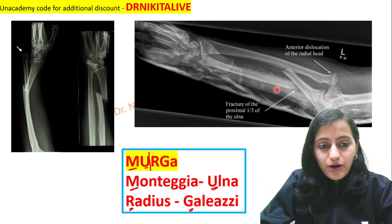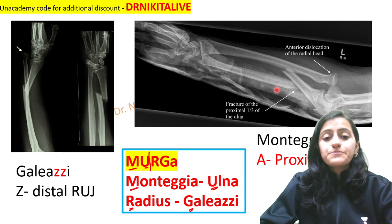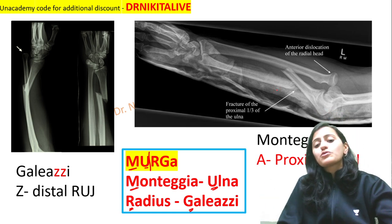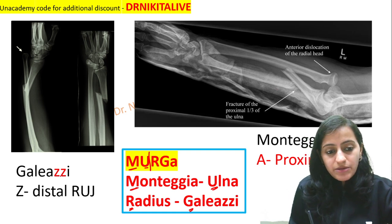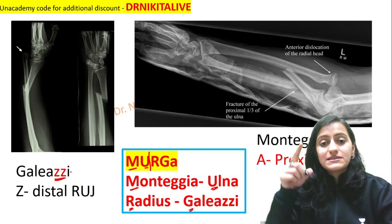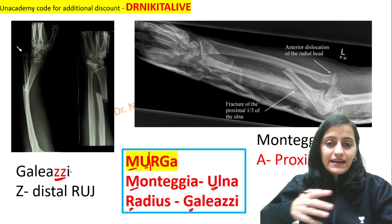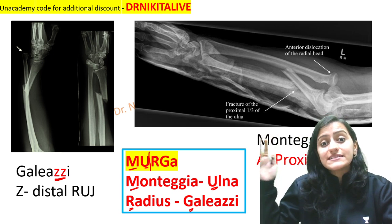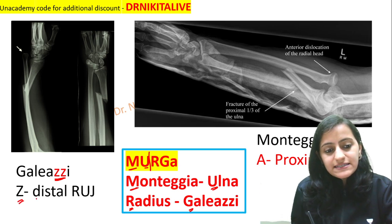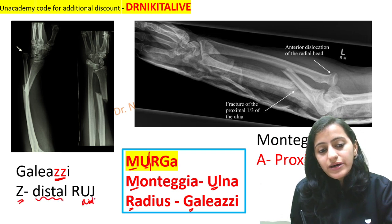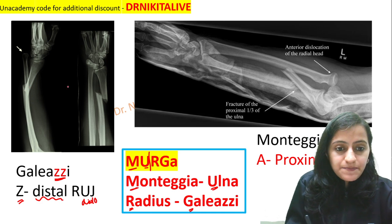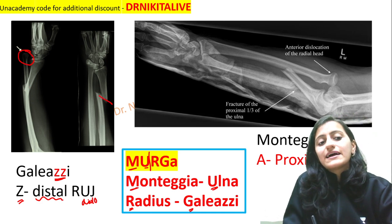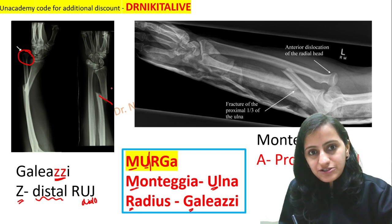Now the other points to remember in Galeazzi and Monteggia: what joint is dislocated — is it the distal radio-ulnar joint or the proximal radio-ulnar joint? Remember, Galeazzi has a double Z and ends in Z. Alphabetically, Z comes at the end — that is, distally. So Z means distal radio-ulnar joint dislocation. As we see here, with the radius fracture, the distal radio-ulnar joint is dislocated — so this is Galeazzi fracture.